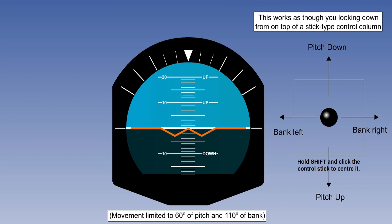The degree of bank is indicated by the marks on the upper arc of the display. The first three marks on either side of centre are in 10 degree increments. The next long mark denotes 60 degrees of bank.